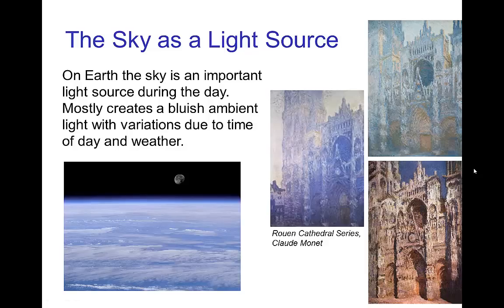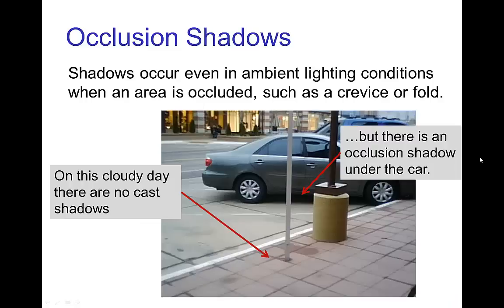Now, a very important light source outdoors in daytime is the sky, not just the sun, but the sky itself, the atmosphere. And this tends to be a bluish ambient light that comes from all directions from above, and of course, it varies due to time of day and weather conditions, whether it's overcast, clear, and so forth.